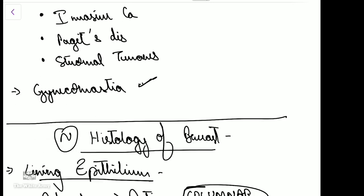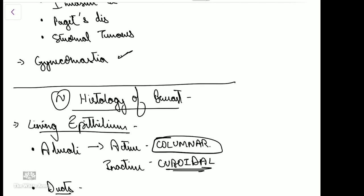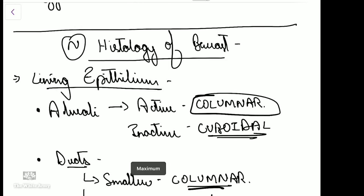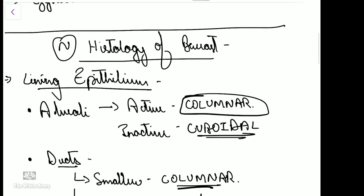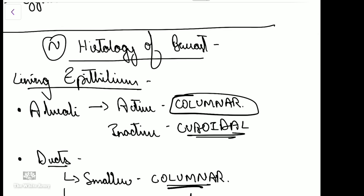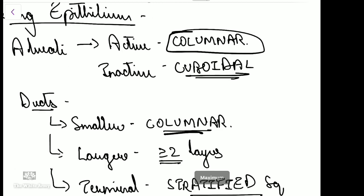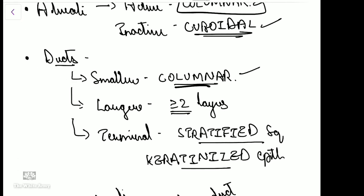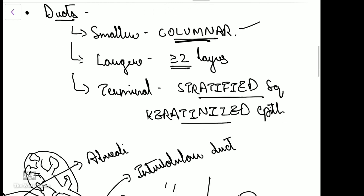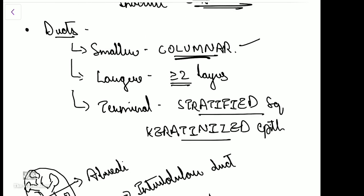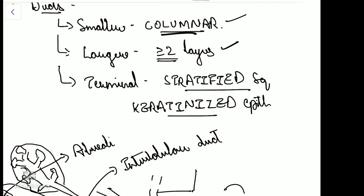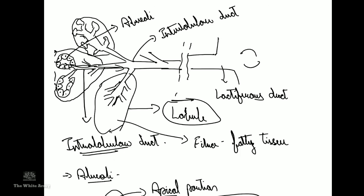Coming to the normal histology of the breast — the lining epithelium of the alveoli when active, that is during pregnancy or lactation, is lined by columnar epithelium, and when inactive it is lined by cuboidal epithelium. The smaller ducts are lined by a single layer of columnar epithelium, while the larger ducts are lined by two or more layers of columnar epithelium, and the terminal ducts are lined by stratified squamous keratinized epithelium.